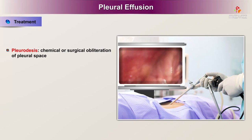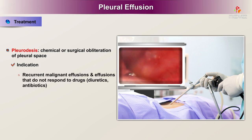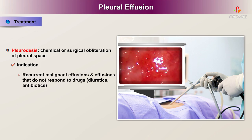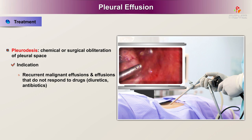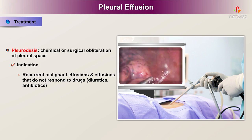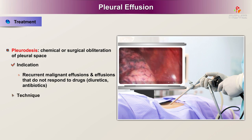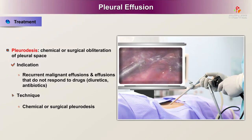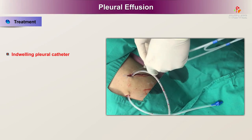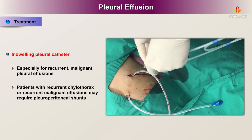Pleurodesis is the chemical or surgical obliteration of the pleural space, indicated for recurrent malignant effusions or effusions that do not respond to drugs such as diuretics or antibiotics. An indwelling pleural catheter is used especially for recurrent malignant pleural effusions. Patients with recurrent chylothorax or recurrent malignant effusions may require pleuroperitoneal shunts.